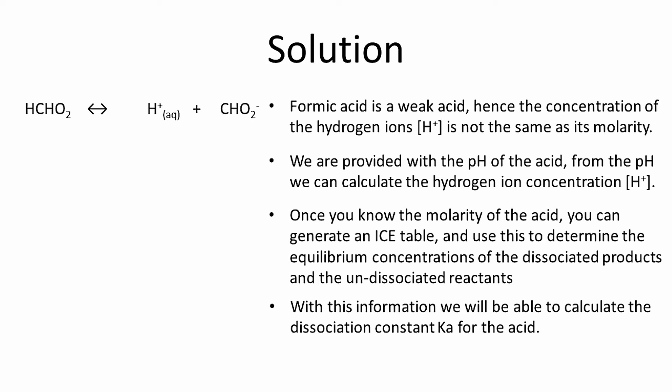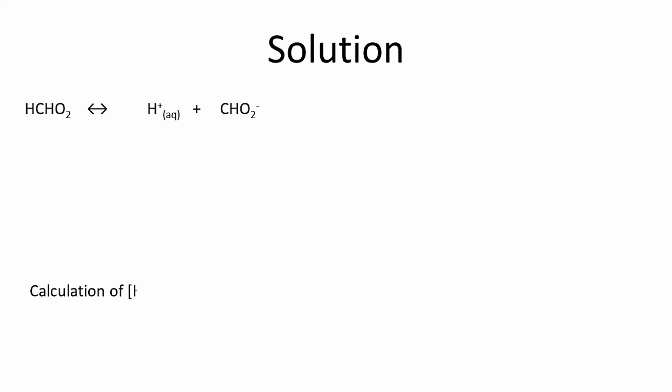The first thing we will do is determine the hydrogen ion concentration from the pH using the following relationship: H⁺ concentration is equal to 10 to the power of negative pH. Now here we will substitute the value of pH with the number that is provided to us.